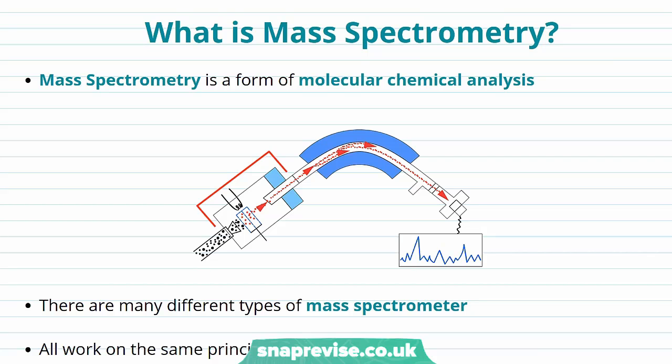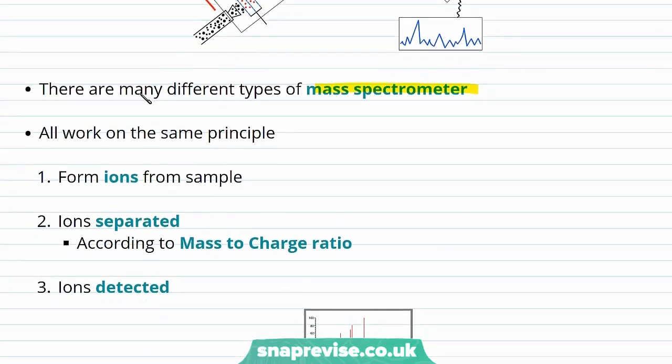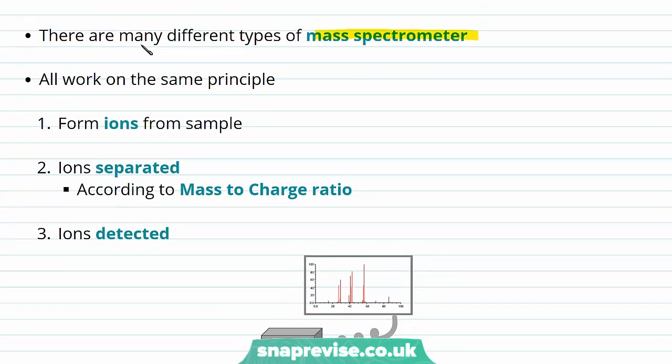Well, mass spectrometry is a form of molecular chemical analysis and there are many different types of mass spectrometer. I've shown one here for you and you can see we have our mass spectrometer and it's producing what we call a mass spectra.